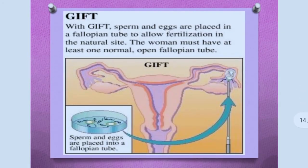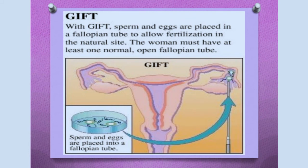The next technique is GIFT — Gamete Intrafallopian Transfer. With GIFT, sperms and eggs are placed into a fallopian tube to allow fertilization at the natural site. For this, the woman must have at least one normal open fallopian tube. This technique is useful for women with a blocked fallopian tube, provided at least one normal open fallopian tube is present. The sperms and eggs are placed into the fallopian tube with the help of laparoscopy.